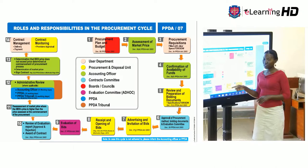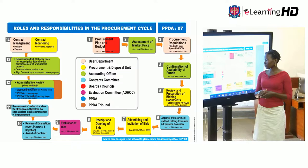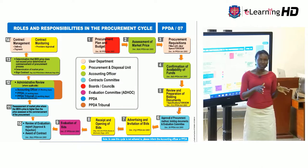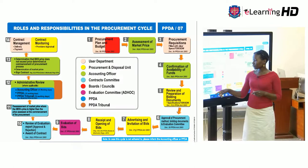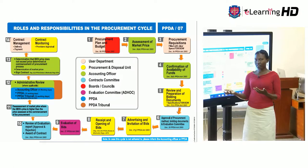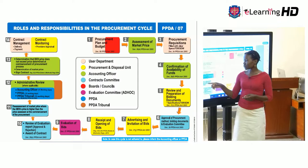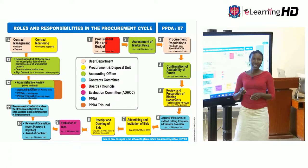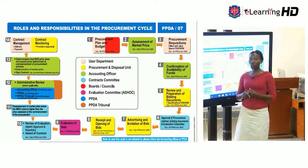Eight, we look at receiving and opening of bids — what offers have suppliers given you? You need to receive them and look at them. Then nine, look at evaluation of those bids: what has each supplier given you, how can you compare, what are the differences and similarities, and who do you zero down on? Ten, you need to review the evaluation report — which suppliers went through as the best evaluated, and review that report to identify any anomalies. Eleven, we look at reassessment of the market price where the best evaluated bid's price is higher than the price assessed at the commencement of procurement. If prices suppliers have given you are higher than when you carried out the market assessment, you need to go back and review what has happened in the marketplace.